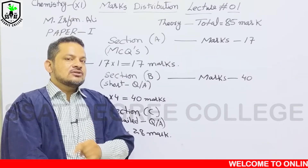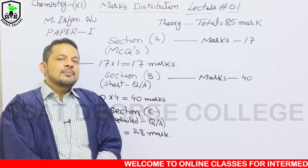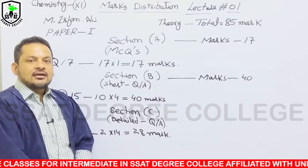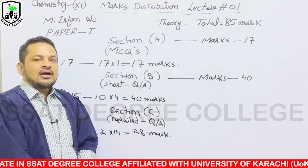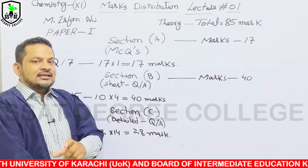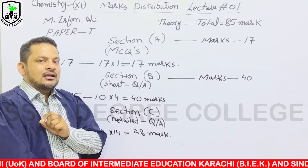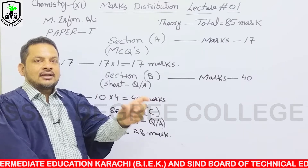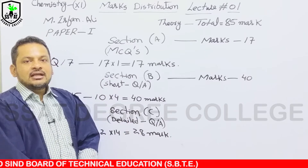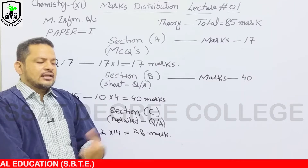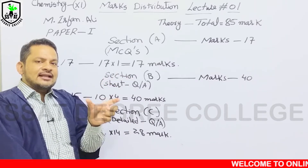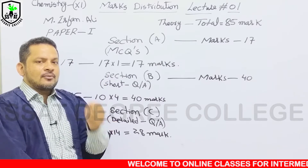याद रखिएगा: MCQs के Paper पर एक Code लिखा होगा, वो Code भी आपको लिखना होगा — क्योंकि अगर Code नहीं लिखा तो Checker Answers आसानी से नहीं ढूंढ पाएगा। सबसे पहले Copy मिलेगी, Answer Sheet के पहले Page पर अपनी Information लिखनी है — Roll Number, Medium, Registration Card Number — यह सारी Information डालने के बाद अगले Page पर MCQs का Code डालोगे।